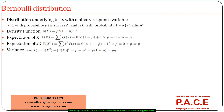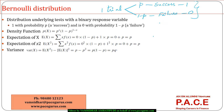Looking at the Bernoulli distribution, there is not much to discuss because we are talking about one trial. We are doing an experiment once, out of which there is a probability P where success can occur. Success is called 1 and the remaining probability 1 minus P is where failure can occur, which is 0. So there are only two possible outcomes: success or failure.